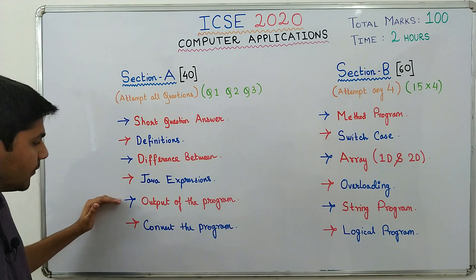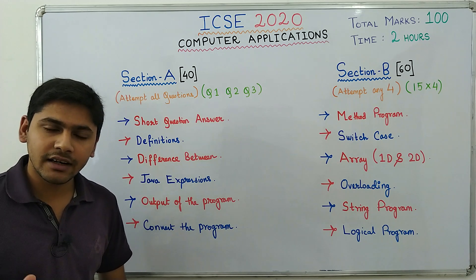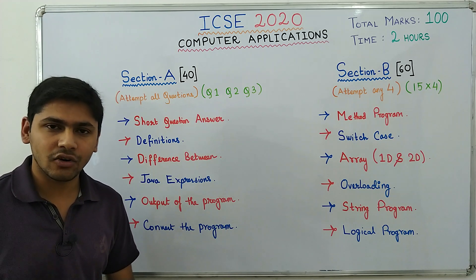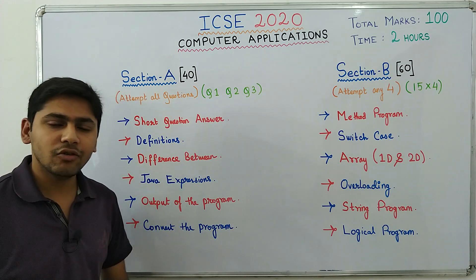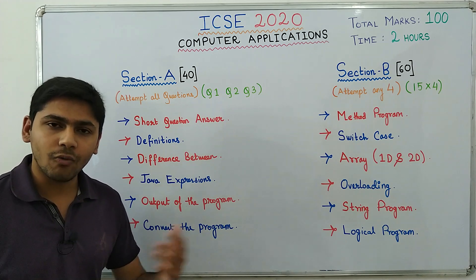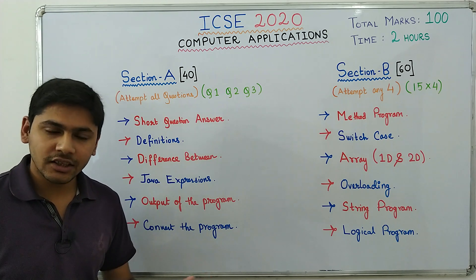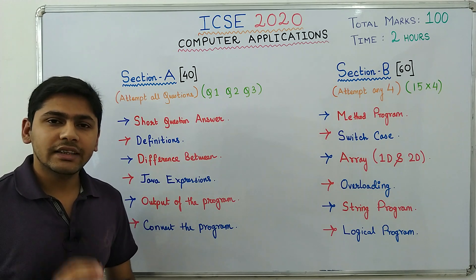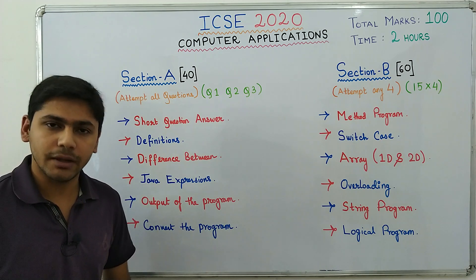Then you will have output of the program. Small programs or small segments of programs and statements will be given and you will have to give the outputs of those. These are relatively easy and not very difficult. Then comes convert the program, where you have to convert say from while loop to do while loop, from for loop to while loop, or from if-else to switch case. These are the types of questions you will face in Section A.